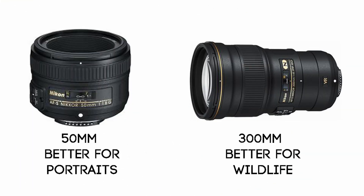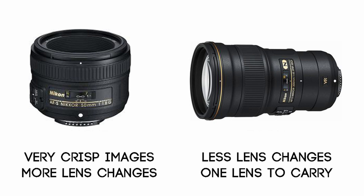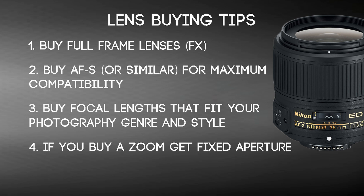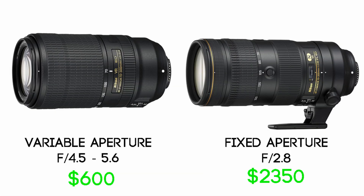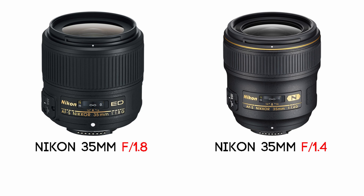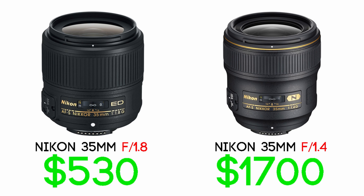Each focal length has certain subjects it works best with. Primes are usually crisper lenses, but zooms are more versatile — whether you get a prime or a zoom depends on your shooting style. Fourth, buy fixed aperture lenses when you buy a zoom lens, meaning it has a low F number that stays consistent throughout the zoom range instead of a variable range. Fifth, if your budget allows, buy lenses with the widest apertures. Keep in mind the difference between f/1.8 and f/1.4 may not make much difference for a beginner or amateur photographer. Always take your shooting style, personal preferences, and budget into account.